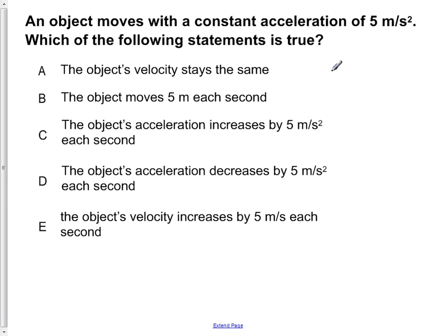An object moves with a constant acceleration of 5 meters per second squared. Which of the following statements is true? A. The object's velocity stays the same. B. The object moves 5 meters each second. C. The object's acceleration increases by 5 meters per second squared each second. D. The object's acceleration decreases by 5 meters per second squared each second. Or E. The object's velocity increases by 5 meters per second each second.